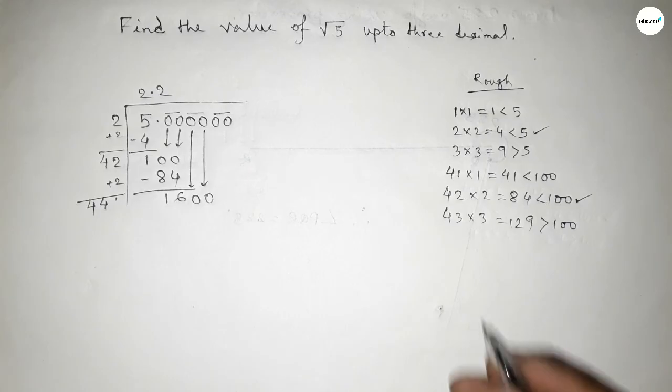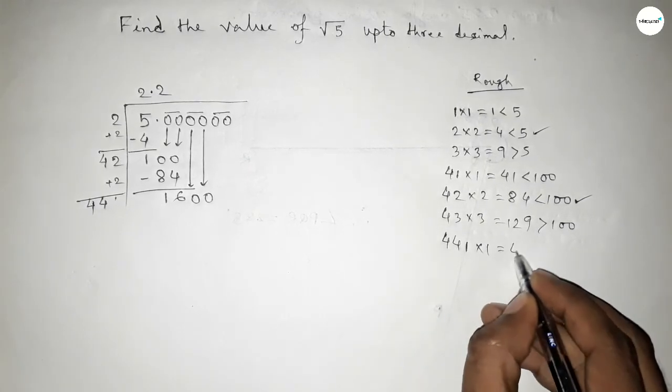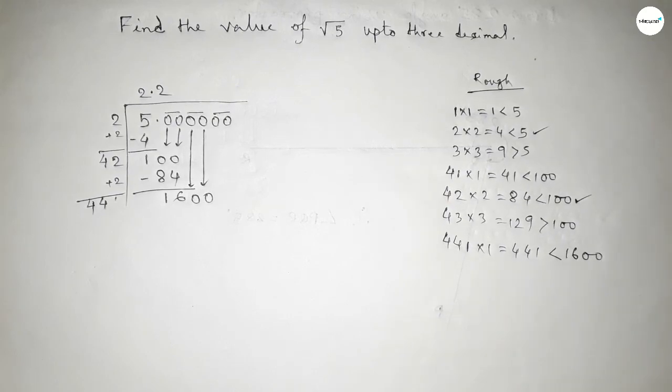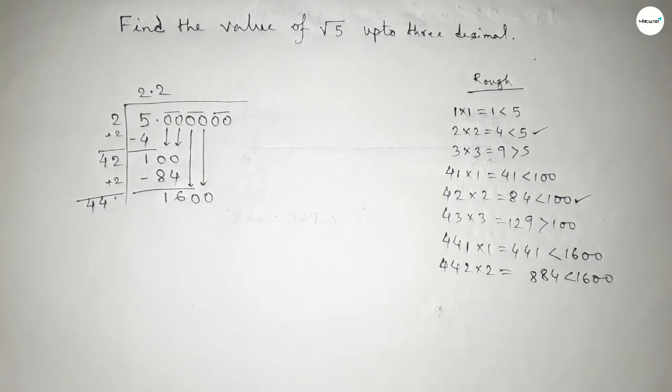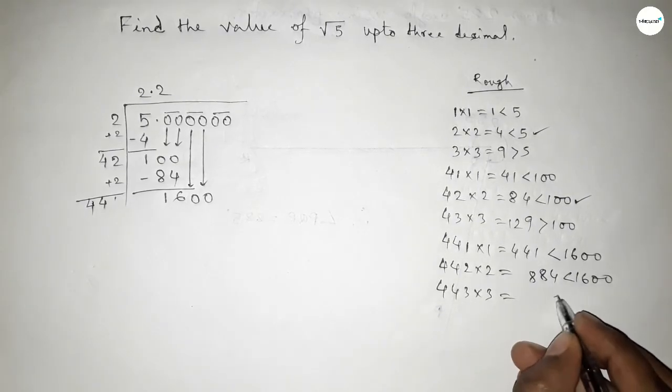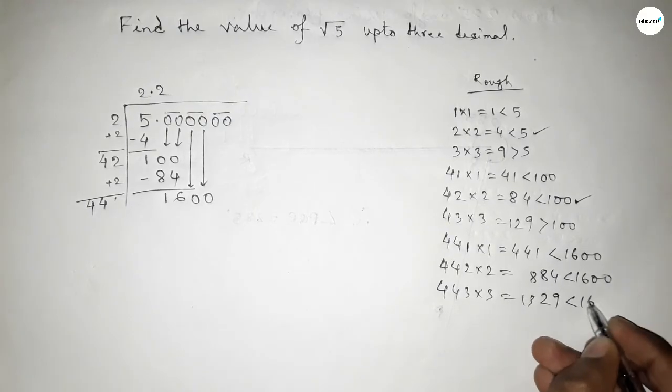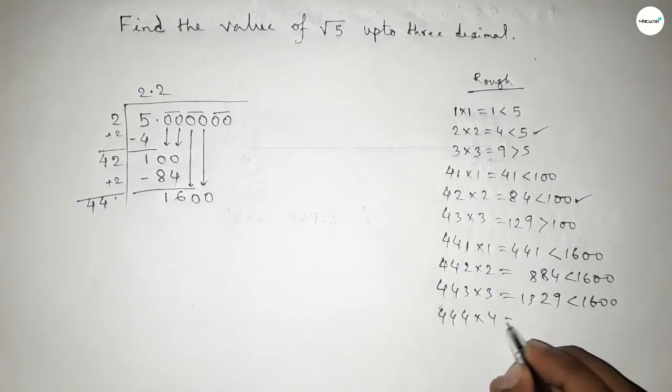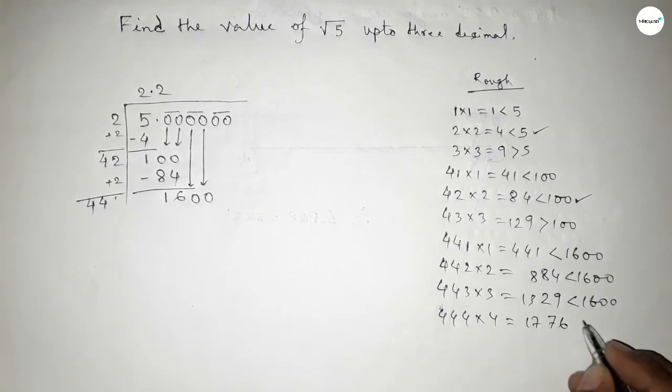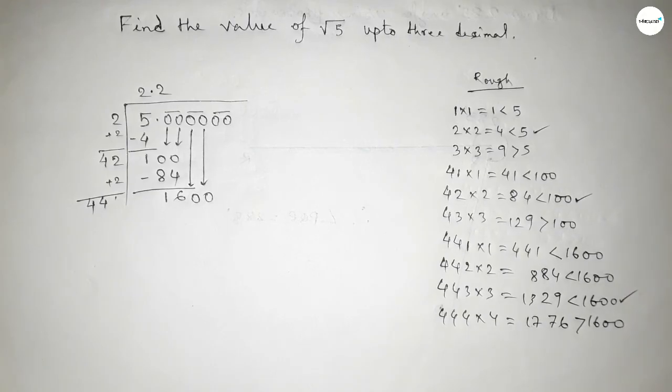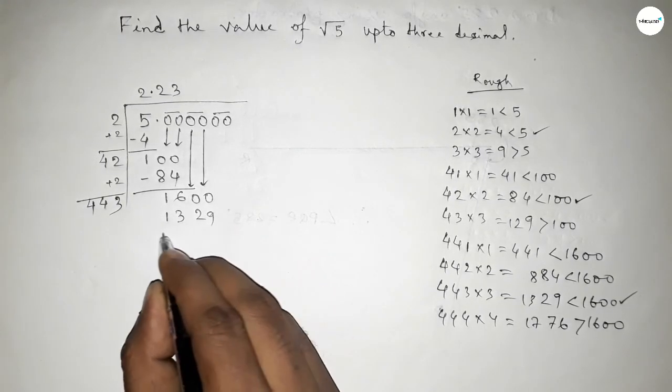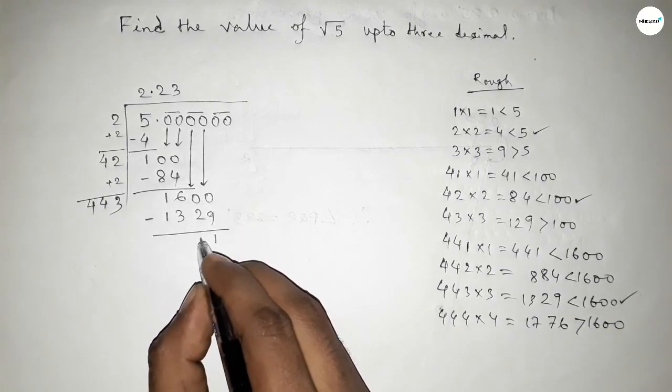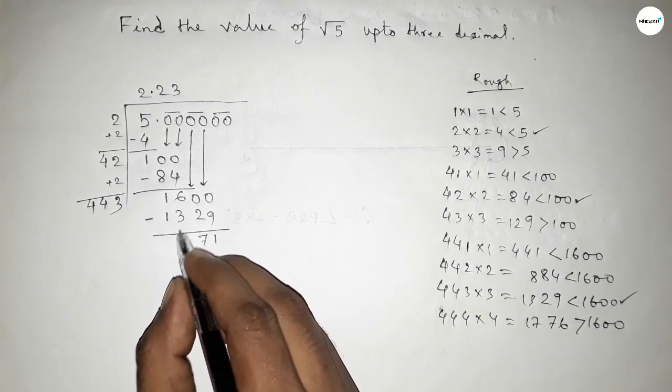Now similarly, what should we put here beside 44? If we put 1, then this is 441 which is less than 1600. If we put 3 and multiplying this which is less than 1600. If we put 4 which is greater than 1600, so we should put here 3. So putting here 3, and here 443×3=1329.